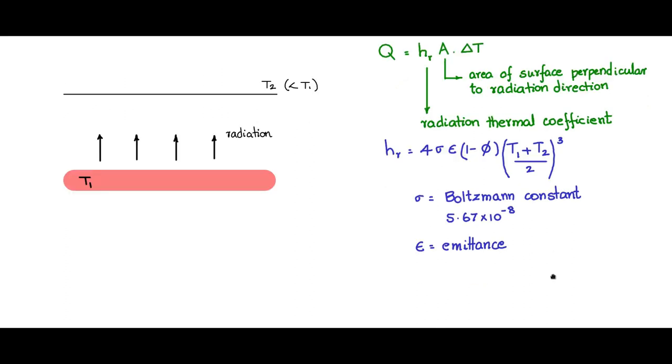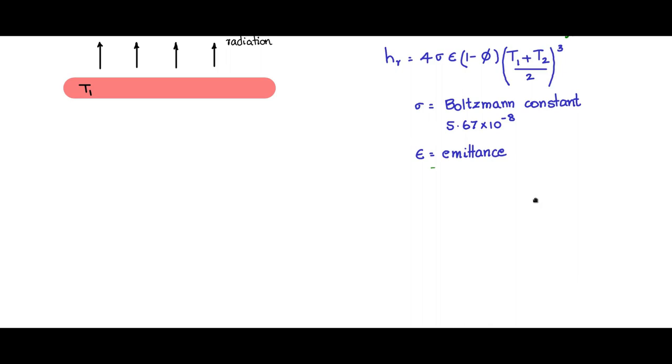Let me list down a few of the emittance values: 0.8 for black anodized aluminum, 0.095 for polished aluminum. Emittance of polished aluminum is less.